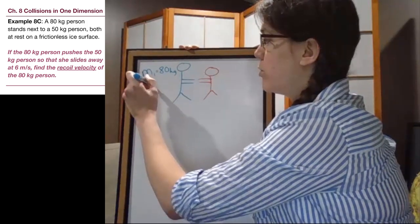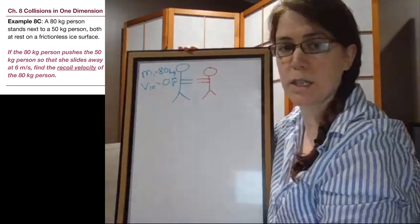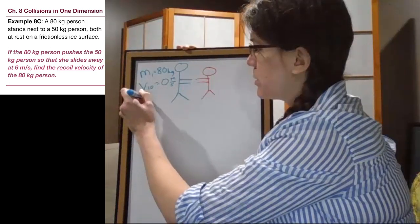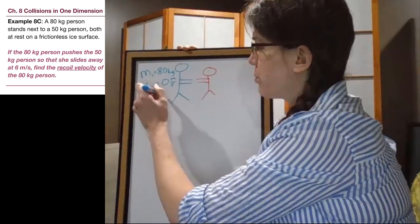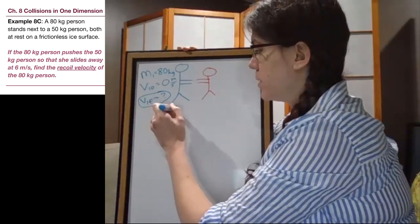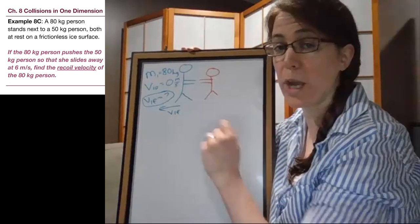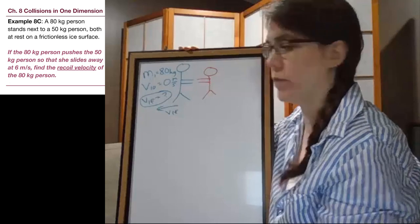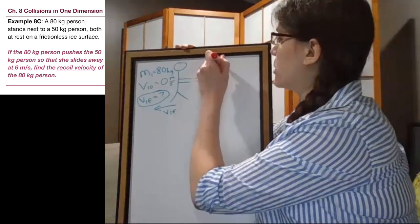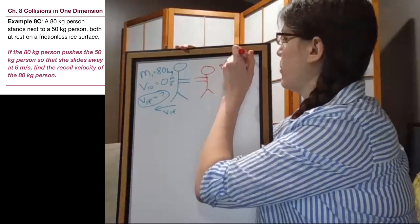So mass one is 80 kilograms. They are initially not moving at all. We're stationary on the ice. And then the recoil velocity of this person is, once we read through the problem, what we're looking for. We're trying to figure out how fast, or how fast rather, how fast to the left away from the pair they're going to move after they hit each other.